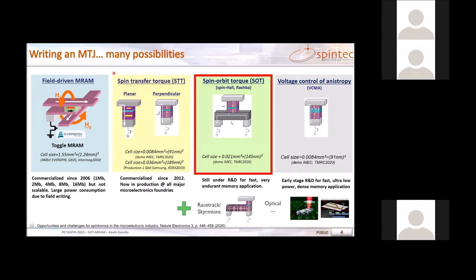When we come to the world of MRAM, there are many families. The very first are field-driven MRAMs, which are not suitable nowadays because they consume too much power. Then we have spin-transfer torque, which Jonathan will overview in the next talk — STT MRAM is commercialized by major foundries like Samsung, TSMC, and GlobalFoundries. And then we have emerging phenomena like spin-orbit torque or voltage-controlled anisotropy, promising for very fast writing or very low power writing, plus other concepts like racetrack memories, skyrmions, and optical writing.